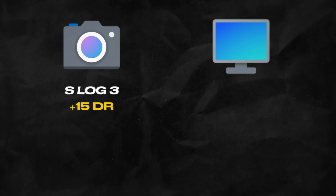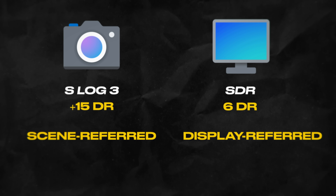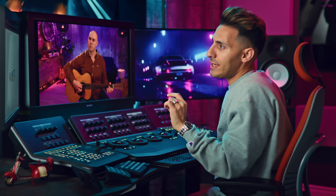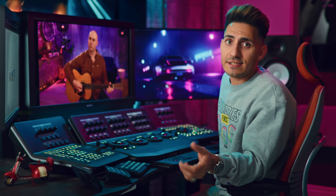S-Log3 gives us about 15 stops of dynamic range as claimed by Sony. SDR chokes at about six stops of dynamic range. So your timeline could be set in scene-referred, which would be S-Log3, or your color space could be set up as display-referred, which would be SDR. Keeping dynamic range in mind, would you rather be working with 15 stops or six while color grading? You want to work with the highest amount of dynamic range, or you can choose standard working spaces like ACES CCT and DaVinci Wide Gamut, which give you more than 20 stops of dynamic range.